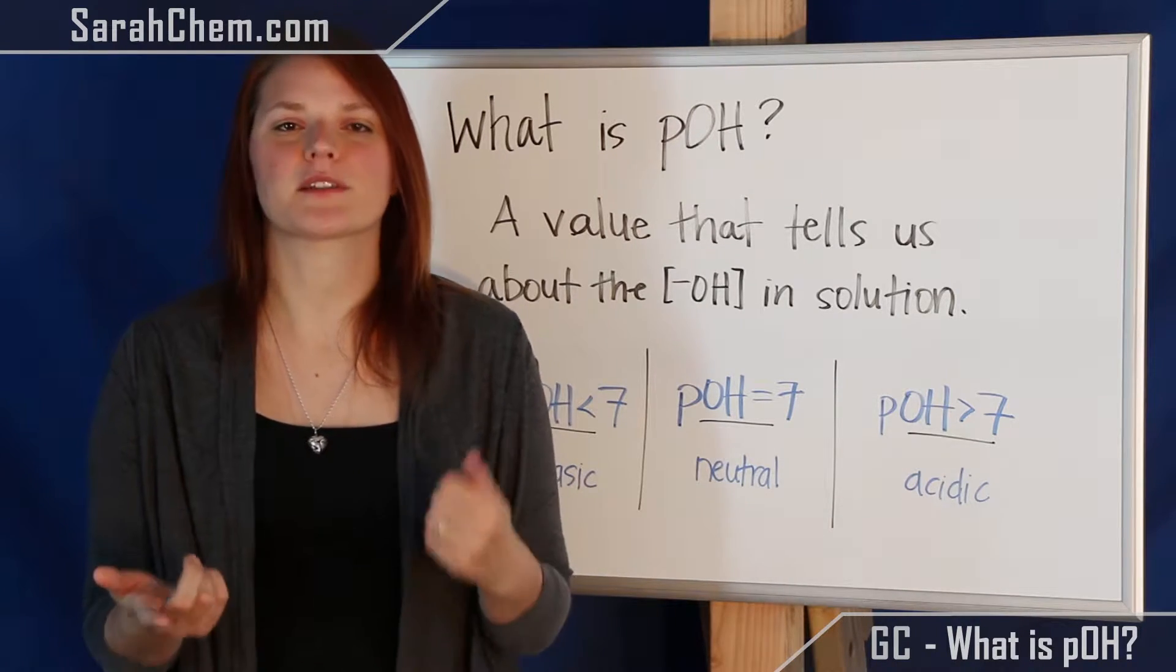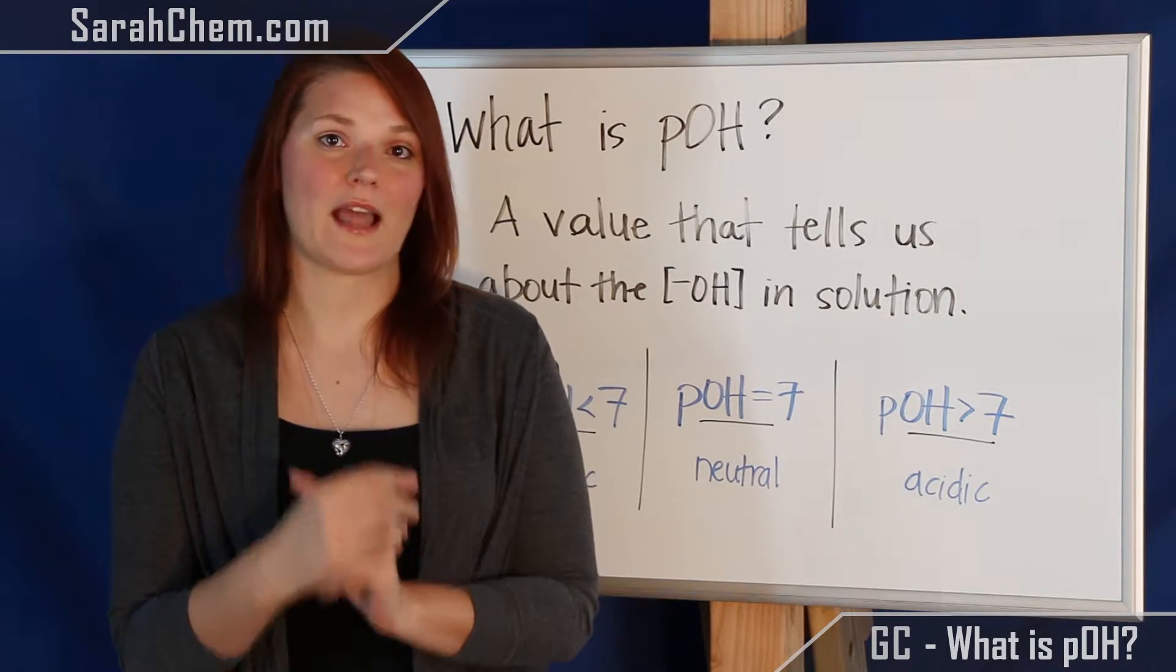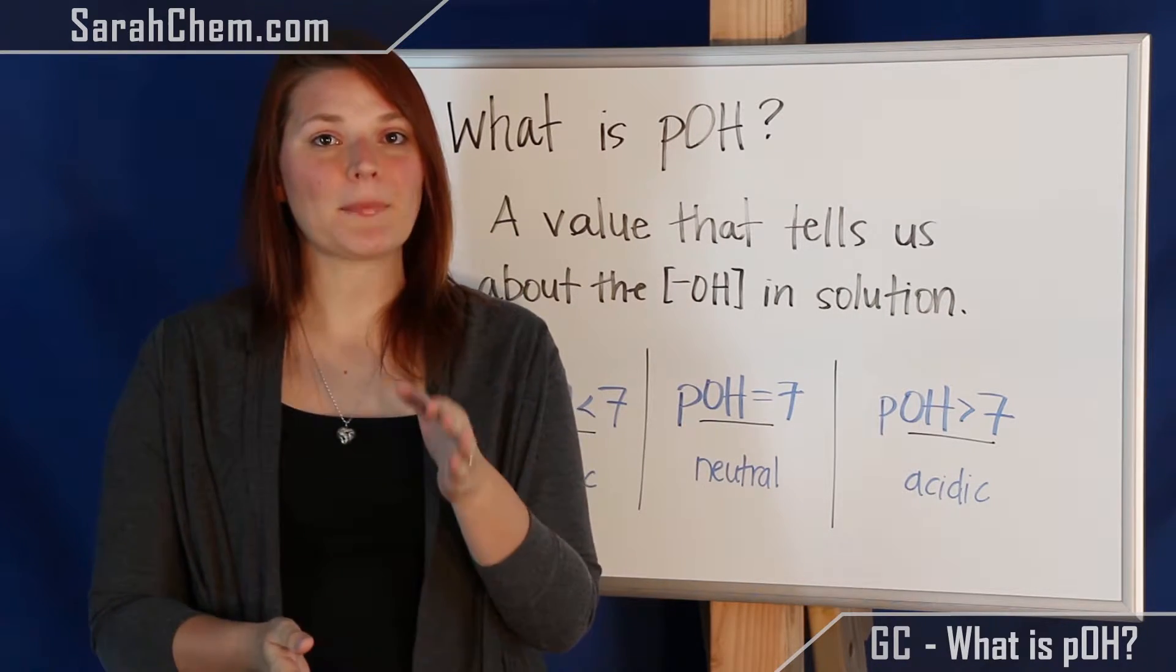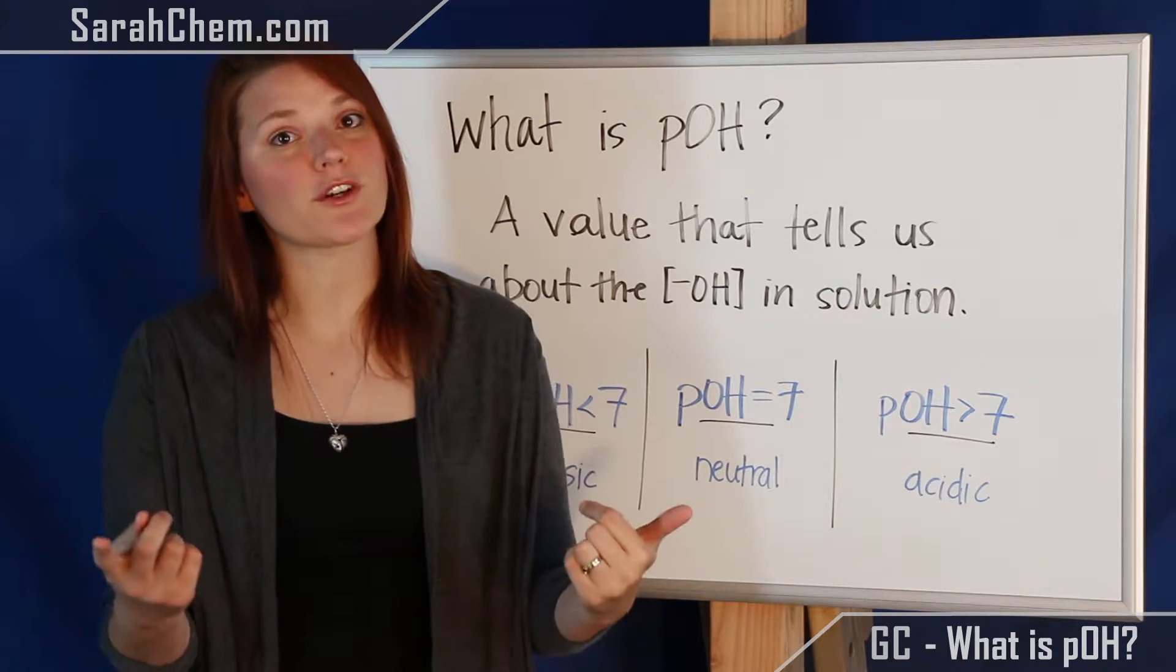So it's kind of the counterpart to pH. Now being the counterpart, there's one important reversal that happens. When we're talking about pH, less than 7 would mean acidic, but it's kind of now the reverse for pOH.